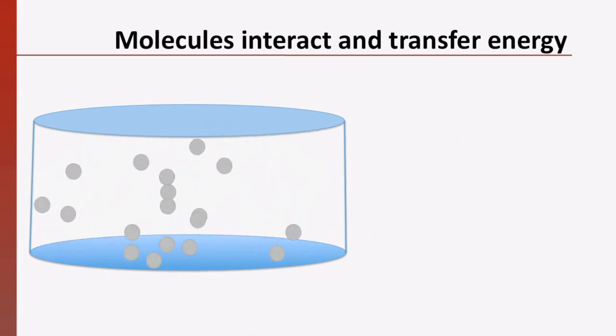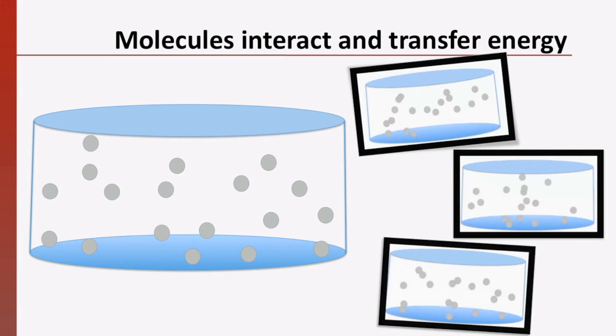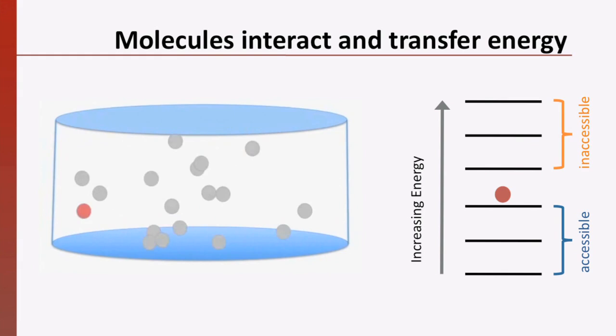Molecules in a system at equilibrium have the same average energy. However, at a given instant in time, it is highly unlikely that all of the molecules have the same exact energy. Molecules in a system are constantly interacting and transferring energy amongst each other. As a result, one molecule may have a certain amount of energy at one instant and, at the next, it could have more or less. Depending on the energy the molecule has, it will be able to access different energy levels. The total energy of the system determines what energy levels will be accessible to the molecules. Higher energy levels will not be accessible because the energy required to reach them is not available.